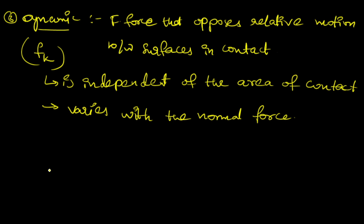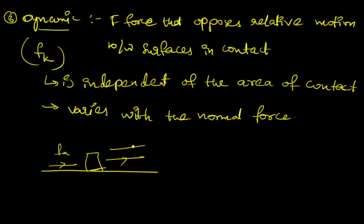For example, I have a huge box on the surface. Whenever I apply a force and this object keeps on moving, dynamic friction exists in the opposite direction to this motion. Kinetic friction opposes the relative motion between surfaces in contact — this object is in contact with the surface and is changing its position with respect to that surface.